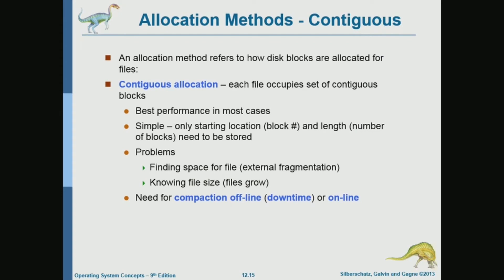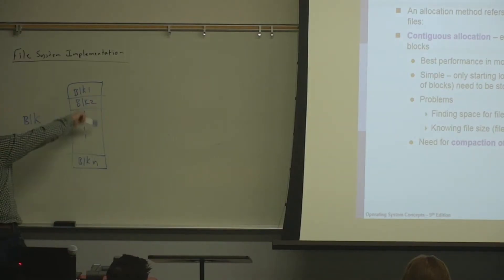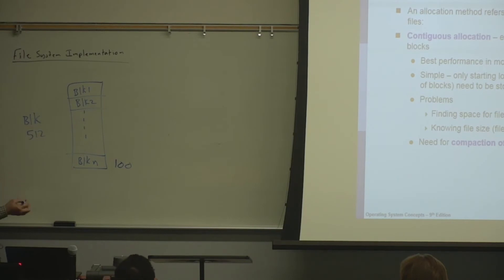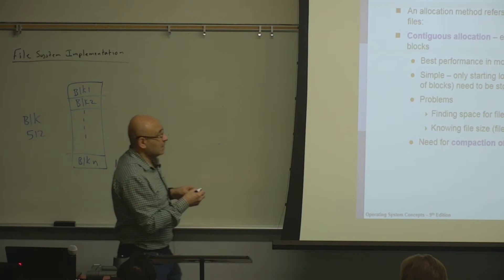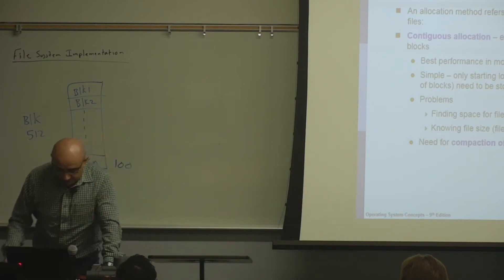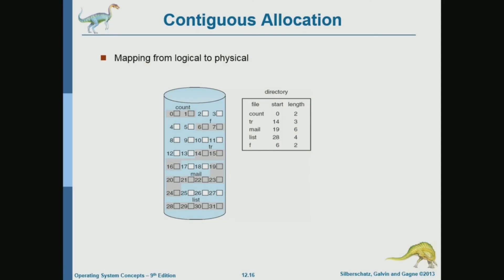First we will look into contiguous allocation. For a file that consists of N blocks — let N be a hundred — in contiguous allocation, we would like to find a hundred contiguous blocks on disk, a hundred contiguous sectors. For example, a file named 'count' starts at block zero and consists of two blocks: zero and one. While 'TR' starts at block 14 and consists of three blocks: 14, 15, 16. So each file has a contiguous sequence of blocks.